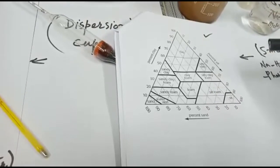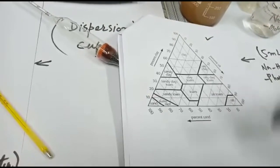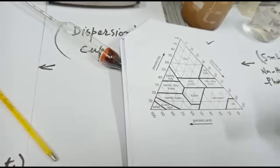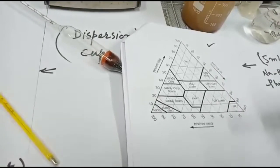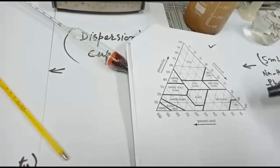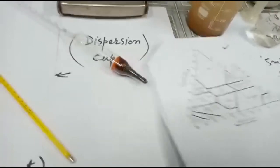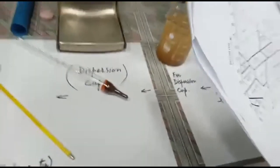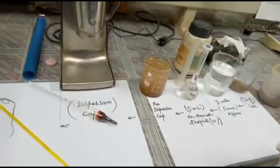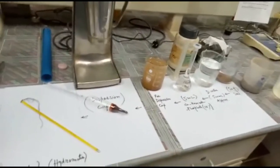In next practical, I will tell you how we can use the sand, silt, and clay to plot those readings on this texture triangle and determine the soil texture. So this is how we determine the soil texture which is an important physical property. Thank you very much.